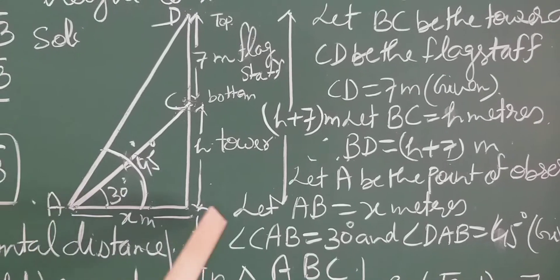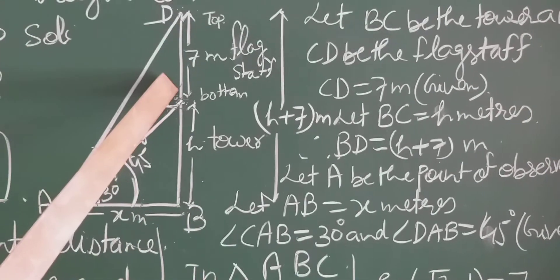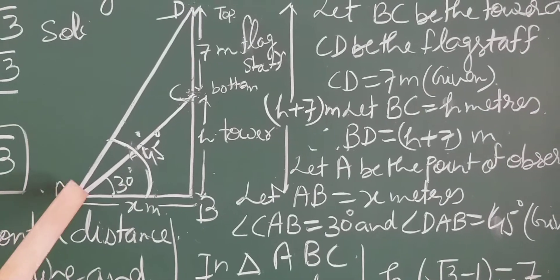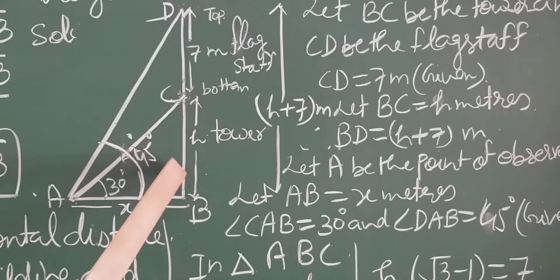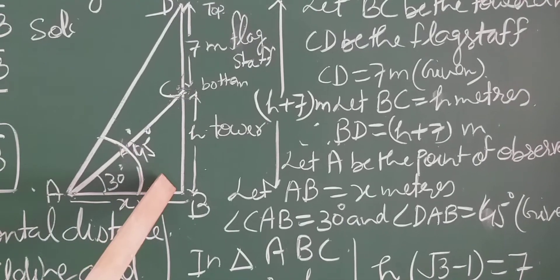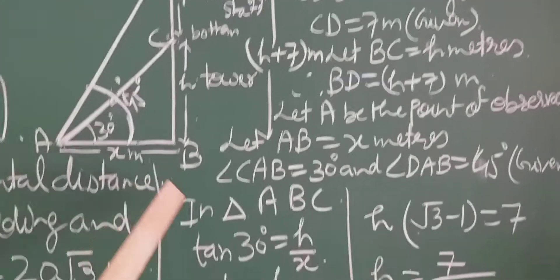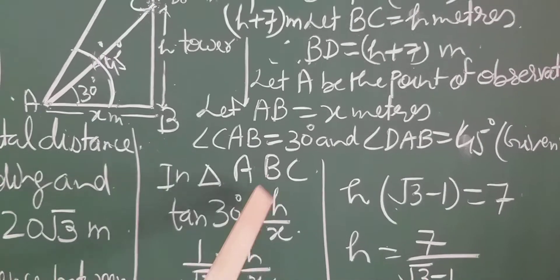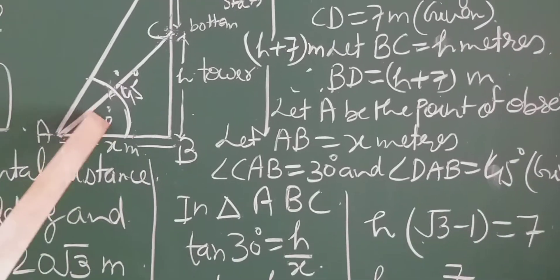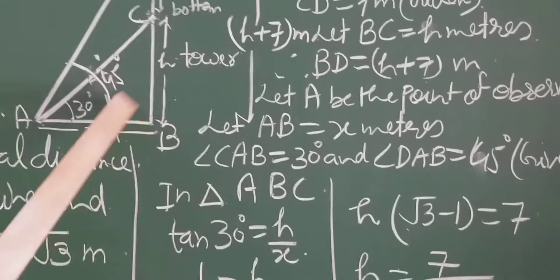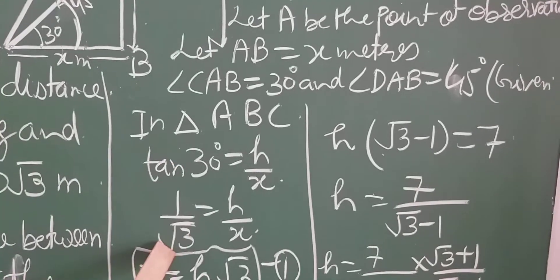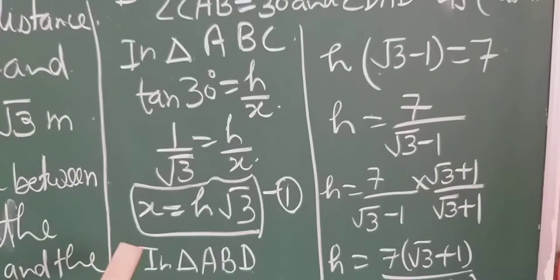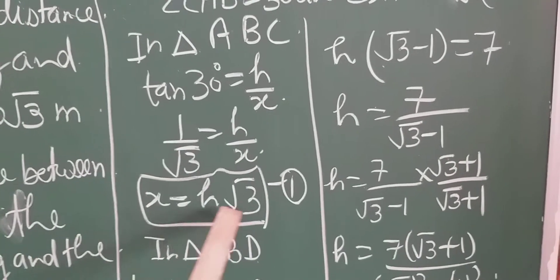Now let us take triangle ABC. We have to take a right angle triangle, so ABC is a right angle triangle with angle B equal to 90 degree. Using tan theta equals P upon B: tan30° equals h upon x. The value of tan30° is 1 upon root 3. By cross multiplication, x equals h root 3. This is equation 1.